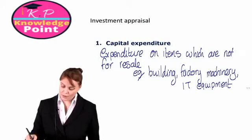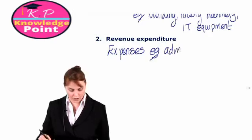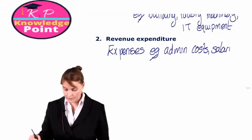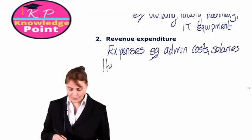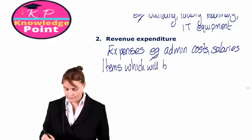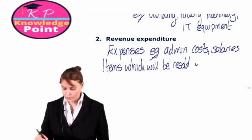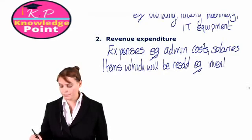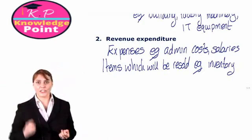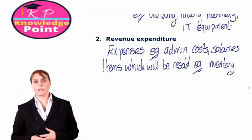In contrast to this, revenue expenditure is expenses like, for example, administration costs, salaries, or items which will be resold. For example, our inventory. The inventory we buy in order to sell on to our customers is a revenue expenditure — we buy it with the express purpose of resale.